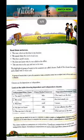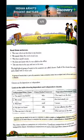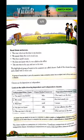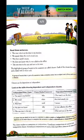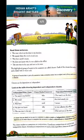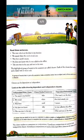A clause can be dependent or independent. It means a main clause — that is, an independent clause — or a subordinating clause — that is, a dependent clause. Main clause means independent clause, and subordinating clause means dependent clause.